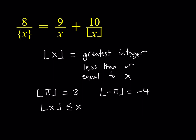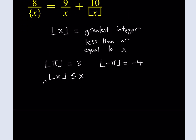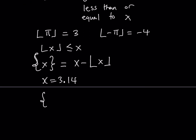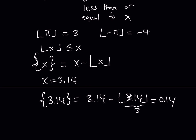Comparing the floor value of x and x itself, we look at the difference. For example, if you consider pi — 3.14 — the floor value of pi is 3, so the difference is 0.14. So the fractional part of x, which we use braces for, is defined as x minus the floor value of x. For instance, the fractional part of 3.14 equals 3.14 minus 3, which is 0.14.